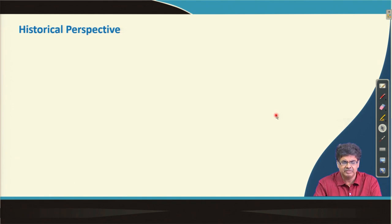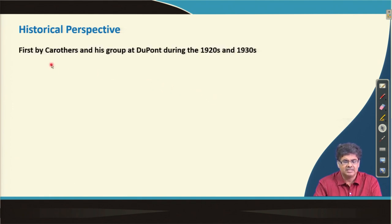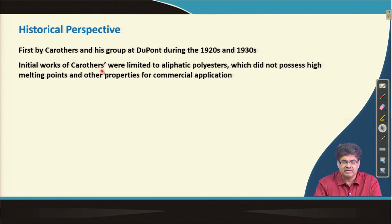To give you briefly a historical perspective, step polymers were first synthesized by Carothers and his group at DuPont during the 1920s and 1930s. The initial work of Carothers was limited to aliphatic polyesters, which did not possess the high melting point and other properties required for commercial applications.